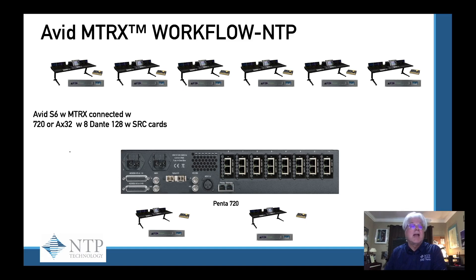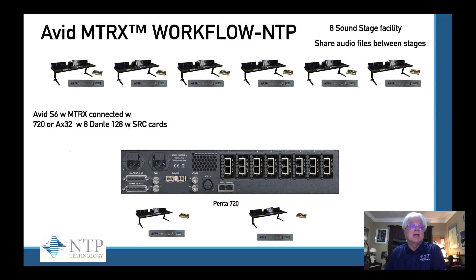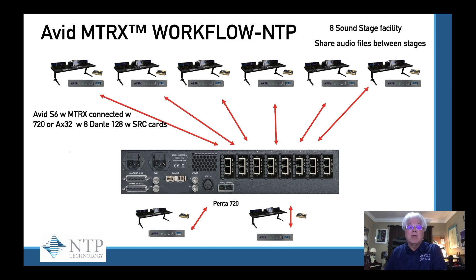So let's look at an Avid Matrix workflow with NTP products. This represents eight different sound stages, where shared audio files are needed between the different stages at different sample rates and different formats. Here we have Avid S6 with Matrix connected to a 720 with eight Dante 128 cards that have sample rate conversion built in. These are all connected directly to the back of the cards, where we have nine possible domains, nine possible clockmasters, nine possible independent sample rates.